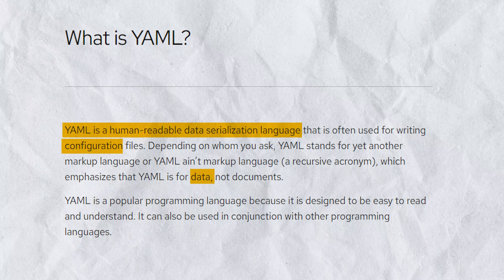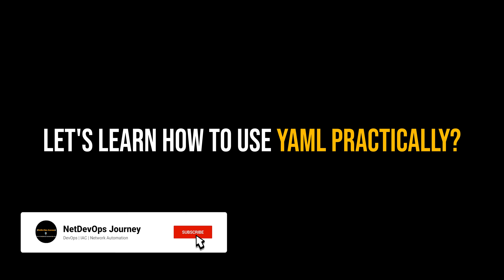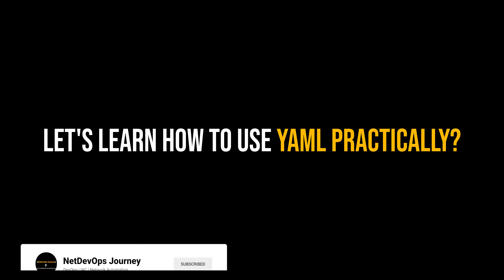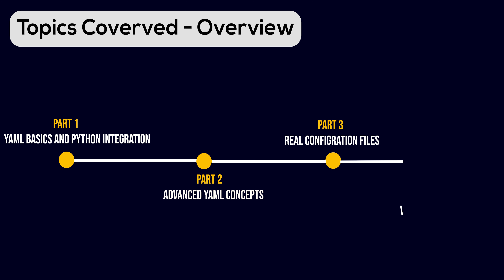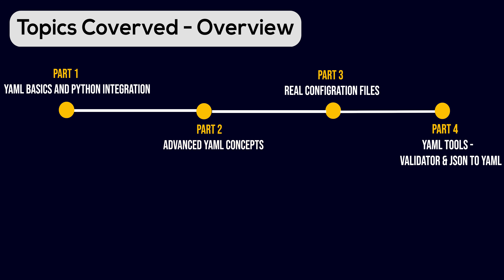Now that you understand the importance and benefits of using YAML, let's learn how to use it practically. We'll start by understanding the YAML essentials — syntax, structures, and how to integrate it with Python. Then we'll explore advanced concepts like nested dictionaries within YAML and building YAML files from raw dictionary data. We'll also jump into real configuration files, looking at examples like Docker and Kubernetes configuration files. Finally, we'll end the series by understanding the different tools for validation and conversion to different formats.